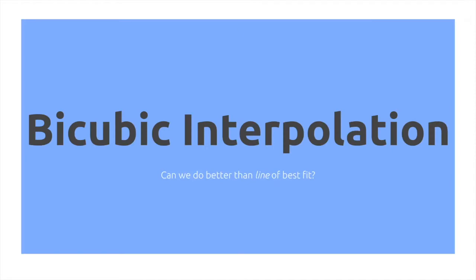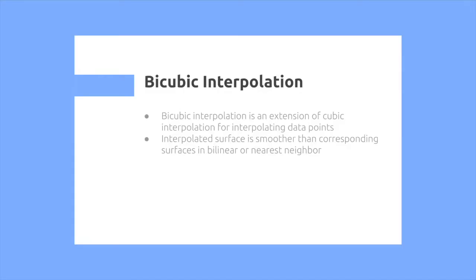So bicubic interpolation, can we do better than a line of best fit? In bicubic interpolation, it's an extension of cubic interpolation for interpolating data points. It's smoother than the corresponding surface in bilinear or nearest neighbor.